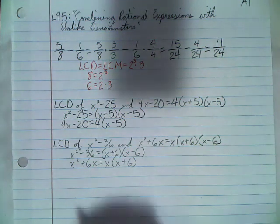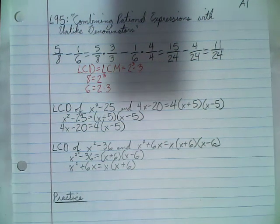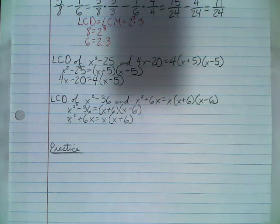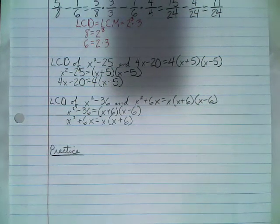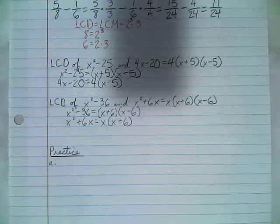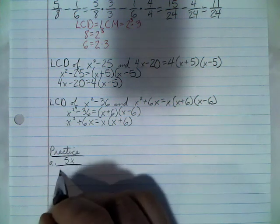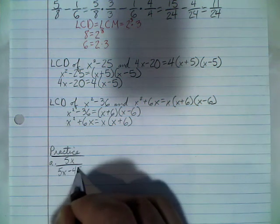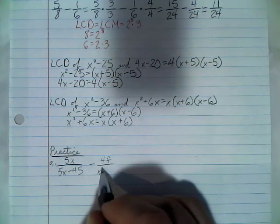With that review out of the way, we're going to look at the practice problems from this lesson. Open up to page 634 — pause the video to flip over to it. Problem A says: find the LCD for each expression. We have 5x over (5x minus 45) minus 44 over (x² minus 81).